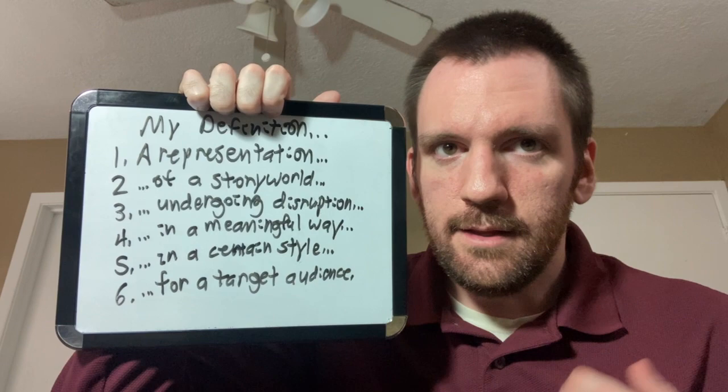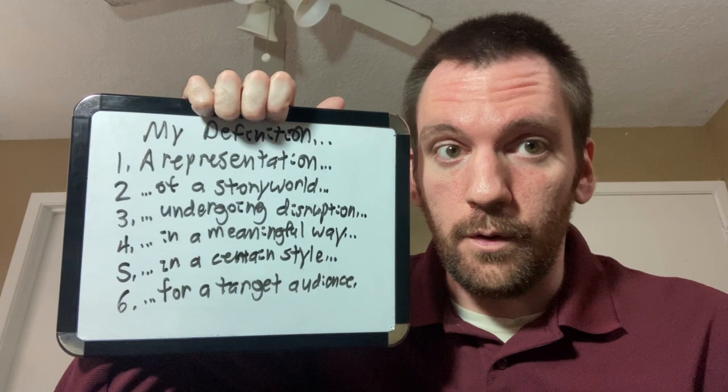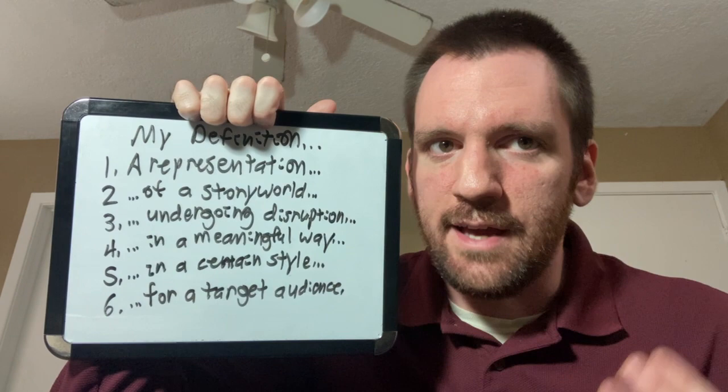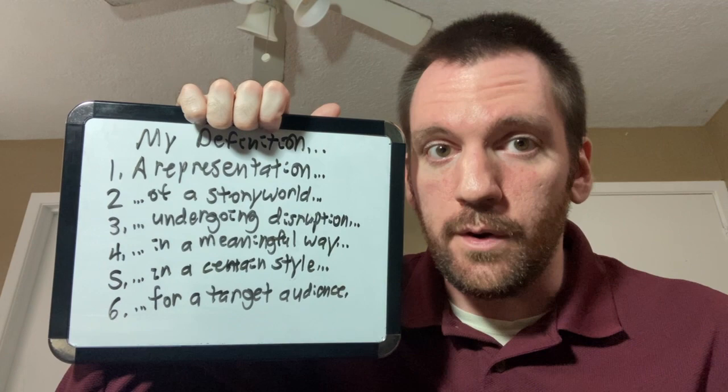Let's break that down. A representation, on what medium do you tell it, of a story world, what is the setting and characters, undergoing disruption, something out of the ordinary happens, even in Slice of Life there are disruptions, in a meaningful way, there's a theme and or experientiality, we get to feel what the characters feel, in a certain style that includes tone and storytelling techniques, for a target audience. Who are you telling the story for?